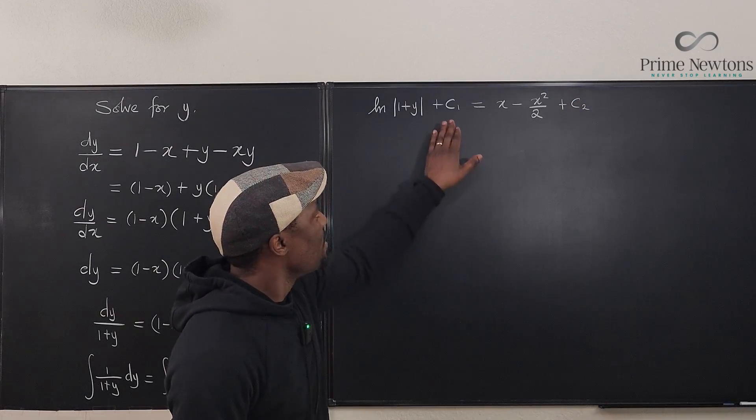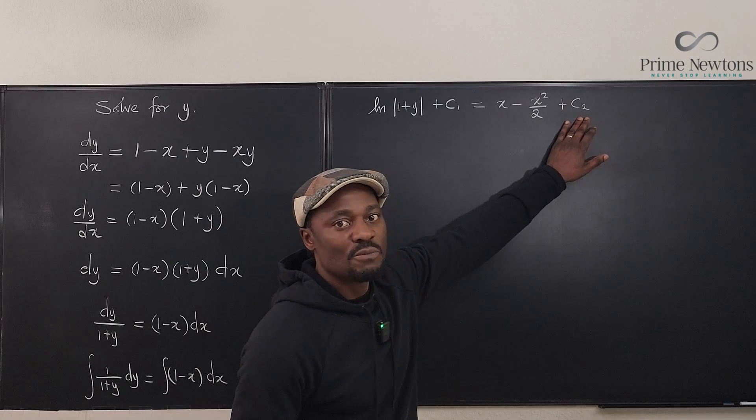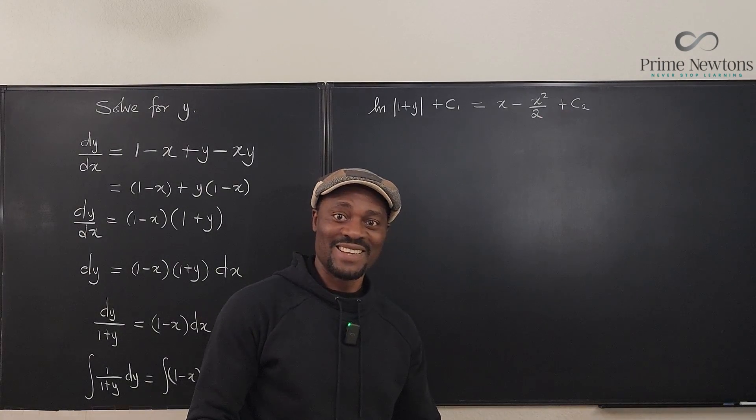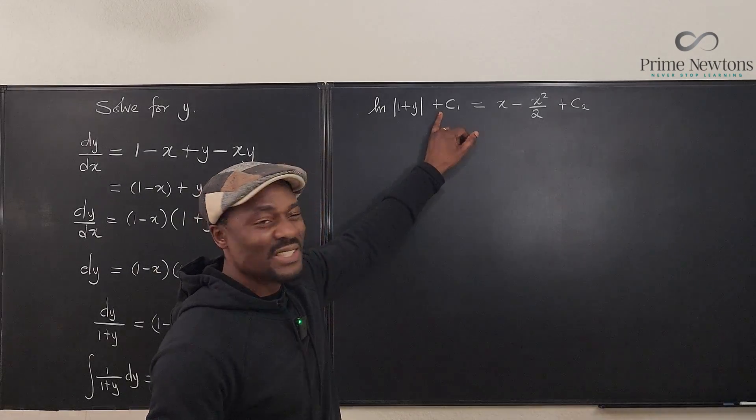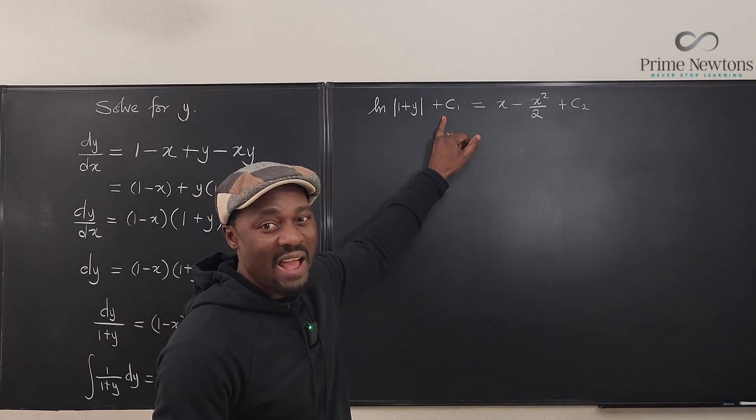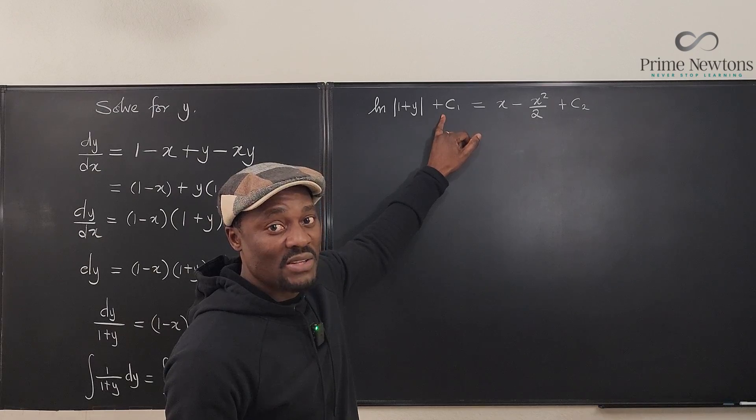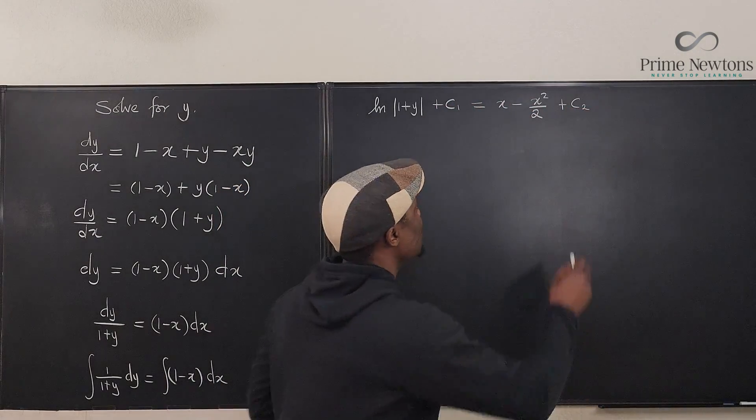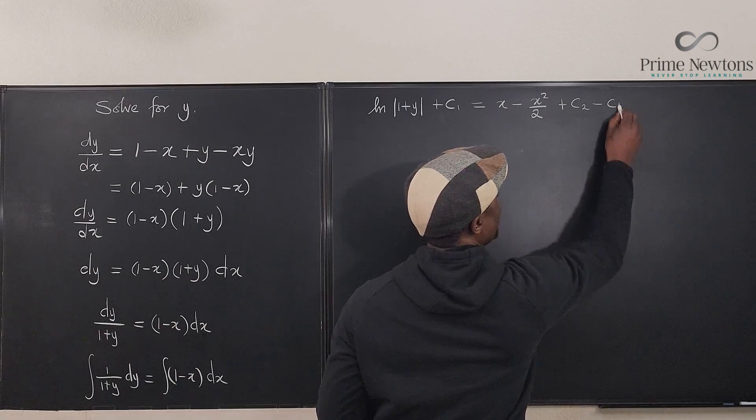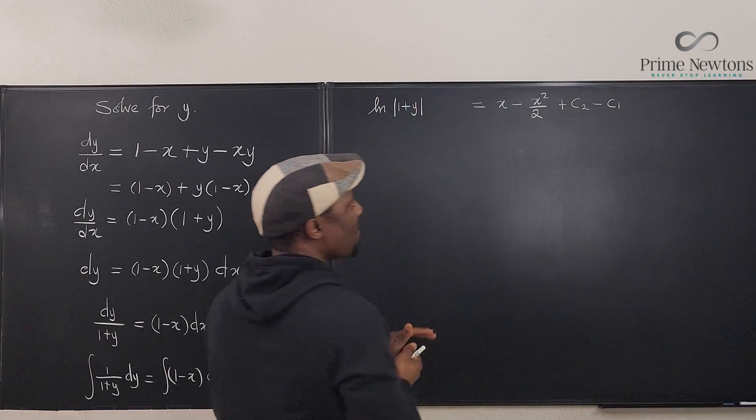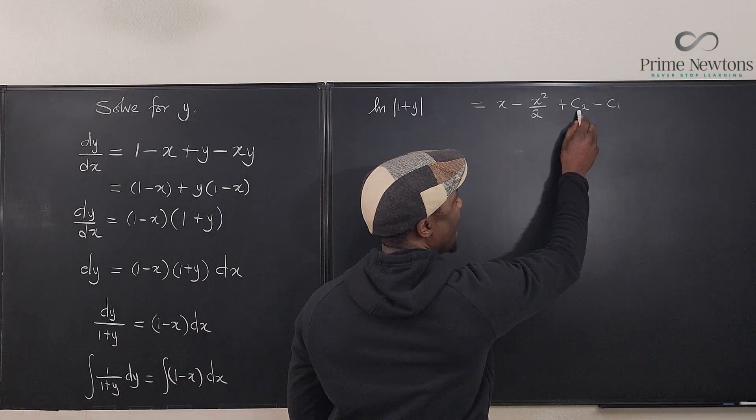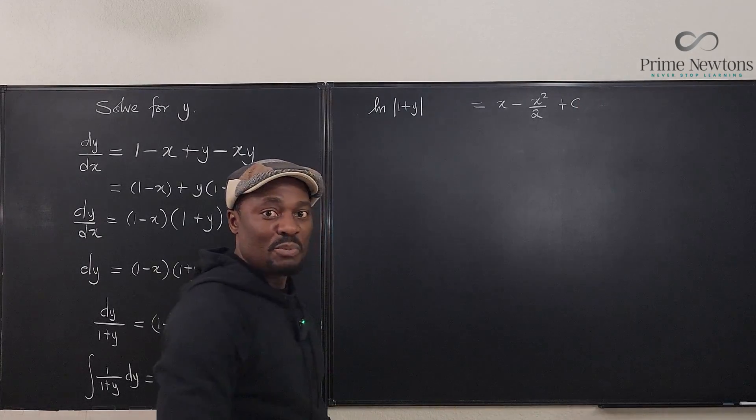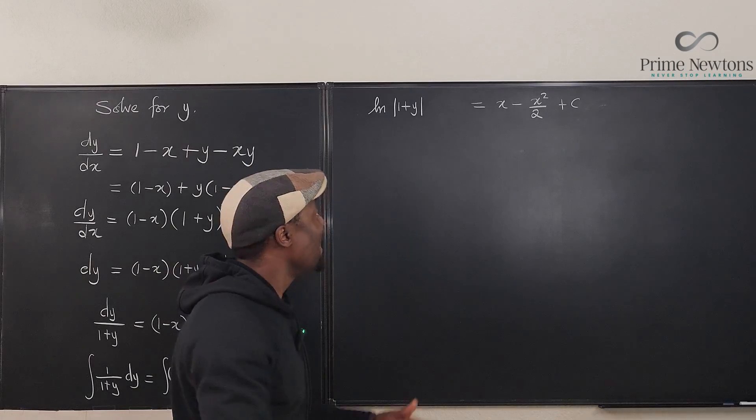Now if you move this c1 to this side, it will become c2 minus c1. But c2 minus c1 is a constant, so instead of us putting a constant here in the first place, we didn't have to. I just wanted you to see that you didn't have to put a constant here, because if we put it here, c2 minus c1 can be written as just c. That's why we only put the constant on the right hand side.